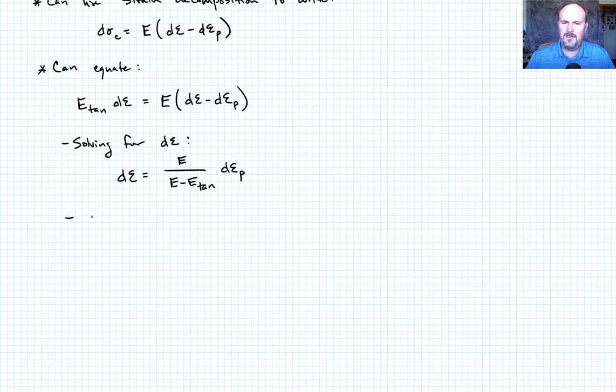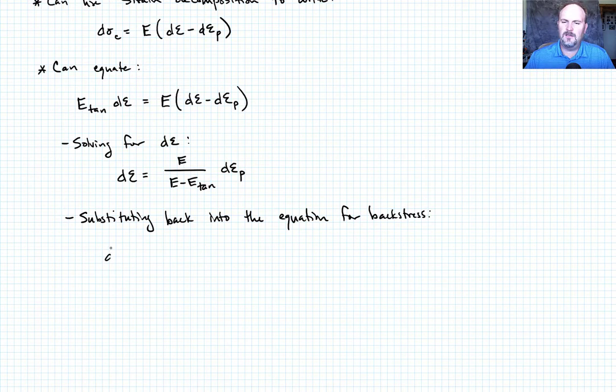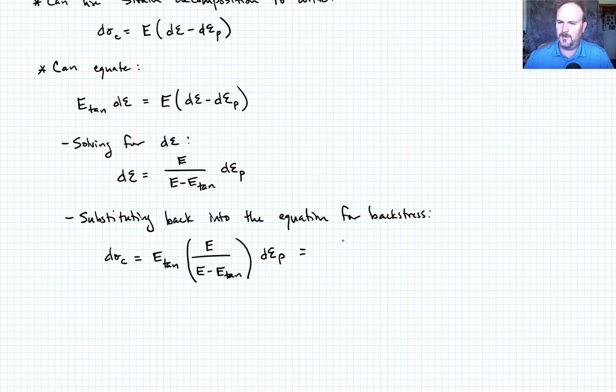And we can substitute back into the equation for the back stress, and write that d sigma c is going to be equal to e tan times this quantity that we just solved for. So now this is e over e minus e tan times d epsilon p. We could further combine to write that's e tan times e divided by e minus e tan times d epsilon p.